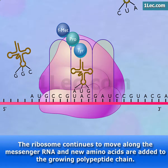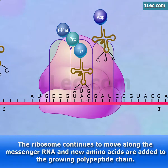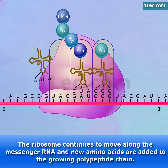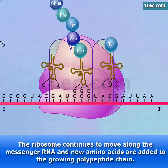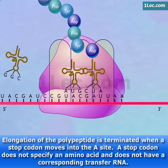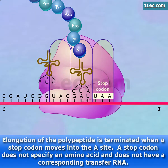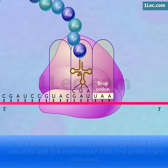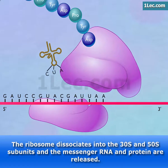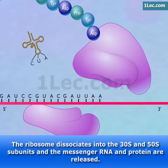The ribosome continues to move along the messenger RNA and new amino acids are added to the growing polypeptide chain. Elongation of the polypeptide is terminated when a stop codon moves into the A-site. A stop codon does not specify an amino acid and does not have a corresponding transfer RNA. The ribosome dissociates into the 30S and 50S subunits and the messenger RNA and protein are released.